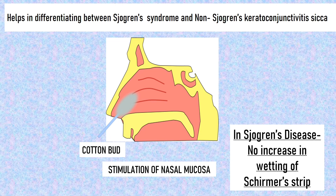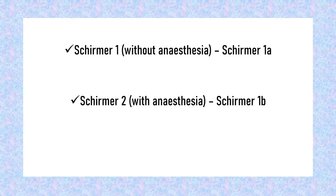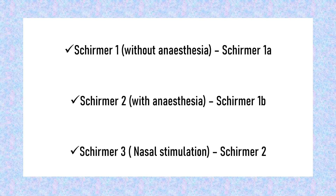One important thing to note is the variation in nomenclature of these tests. Some texts divide Schirmer 1 into 1a and 1b — that is, Schirmer done without anesthesia and Schirmer done with anesthesia — while Schirmer 2 in those texts refers to the version done with nasal stimulation.